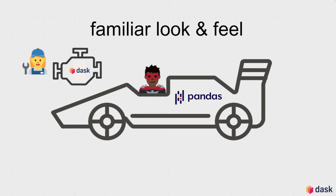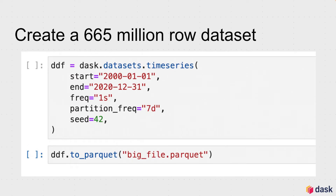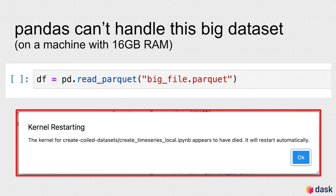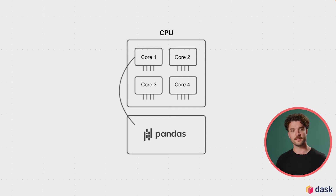This means we have a familiar look and feel, but no more limits on data size. Let's illustrate this with some code. Here we create a 665 million row dataset with Dask and write it to Parquet. If I try to load this dataset with Pandas, I will get a memory error because my machine doesn't have enough RAM. However, Dask can handle this computation, and with Pandas-like syntax, we can perform computations over this dataset. So what's happening here? Why is Pandas limited and Dask not? Pandas is limited because it processes all of your computations on a single core.